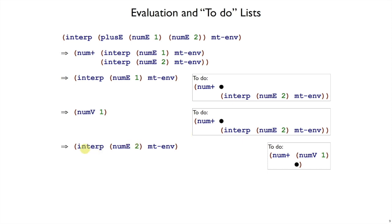So interp of num e2 is now what plate is working on, while it remembers still that it has to do the num plus in the future. The to-do list has changed to remember that once you get the second value, then you can actually perform the plus.